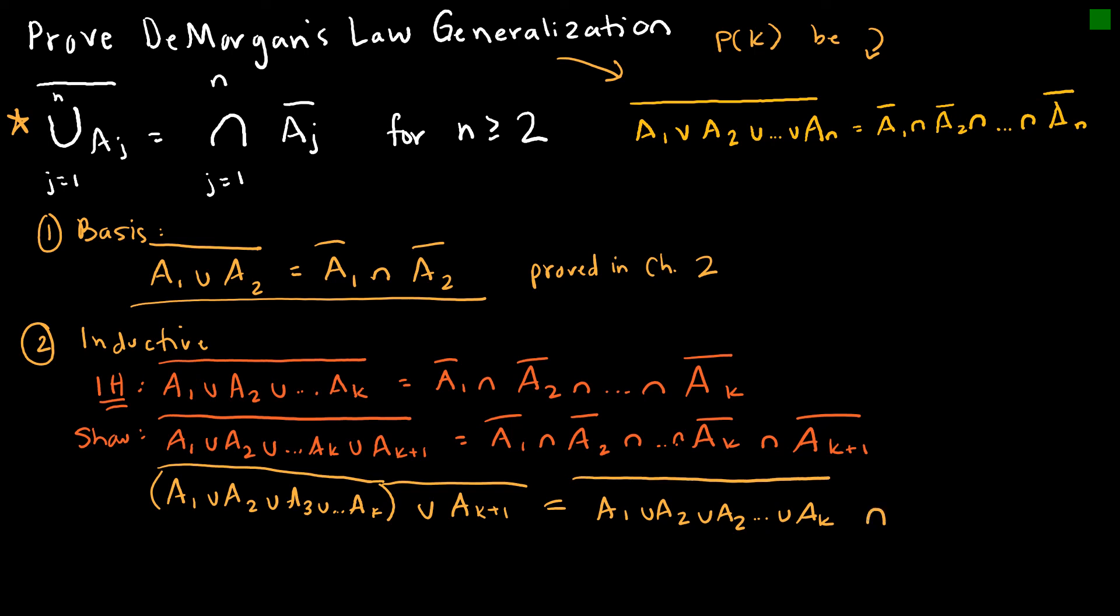I'm going to then take the intersect of all of that with the complement of A k plus one. And again, that was just using DeMorgan's law that says if you have the union of two sets, then it's equal to the intersection of those.